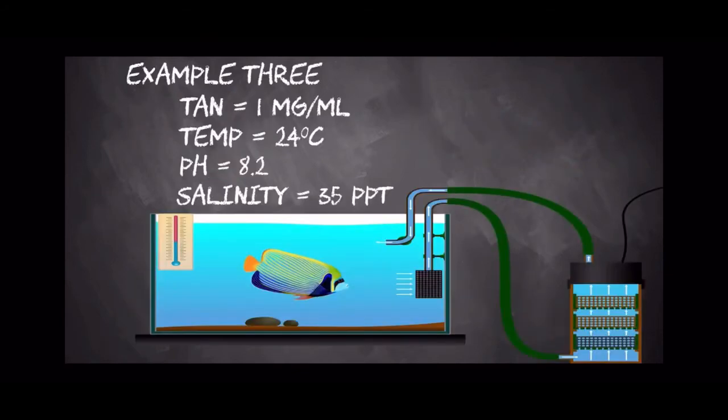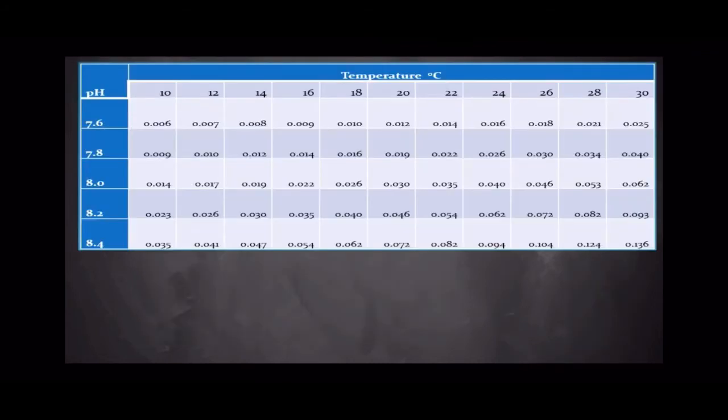Now in this third and final example, we're going to be looking at a marine tank. And here we actually are going to be using a different chart to determine the conversion factor. This chart considers the effect of salinity on the percentage of toxic ammonia that is present. And as with our freshwater samples, we still need the pH and the temperature of that aquarium water. The chart used here is designed for an aquarium of full salinity or 35 parts per thousand, which is the same as saying 35 grams of salt per liter. And as with the freshwater examples, locate the temperature at the top of the chart, the pH at the left of the chart, and get the conversion factor where these two values intersect.